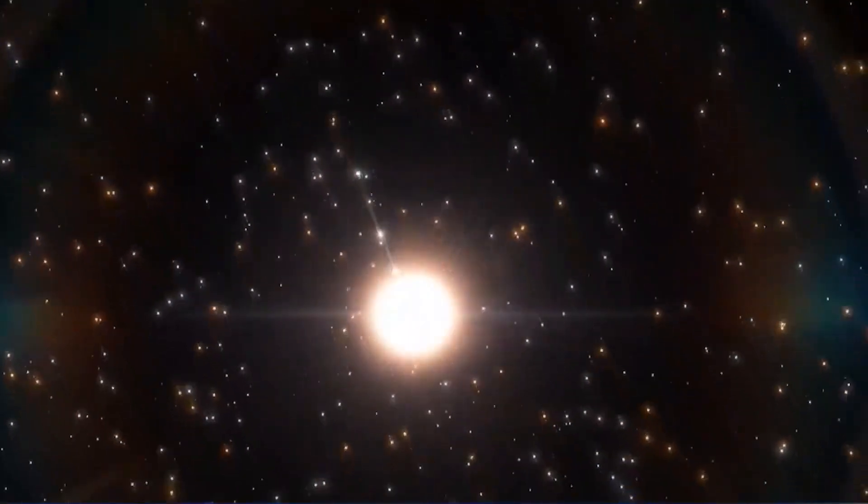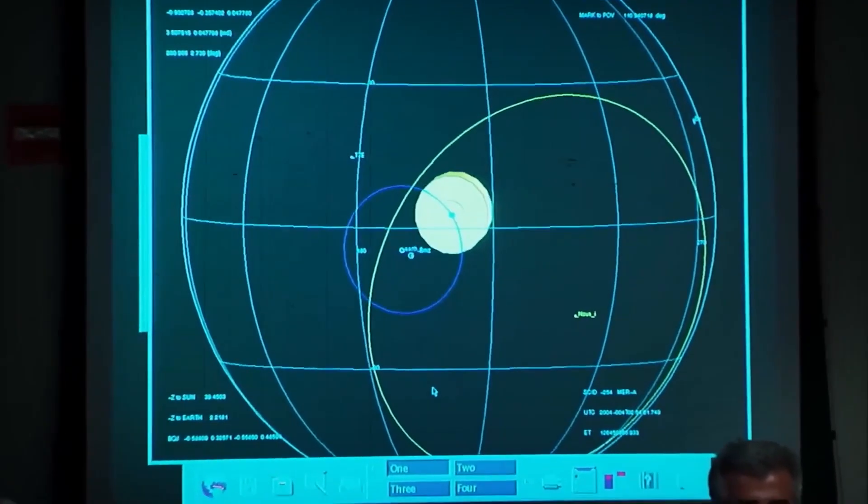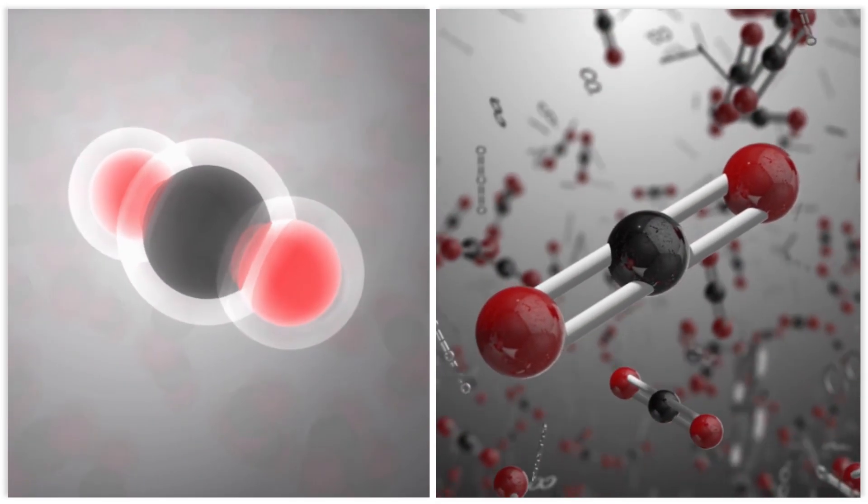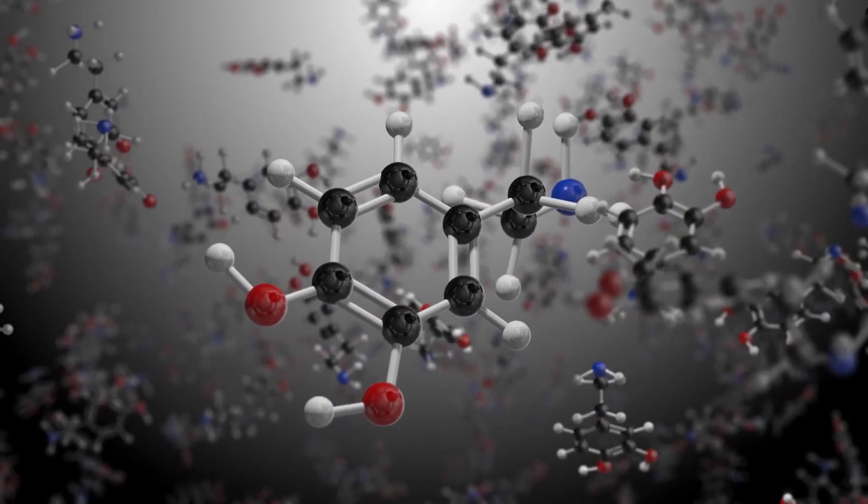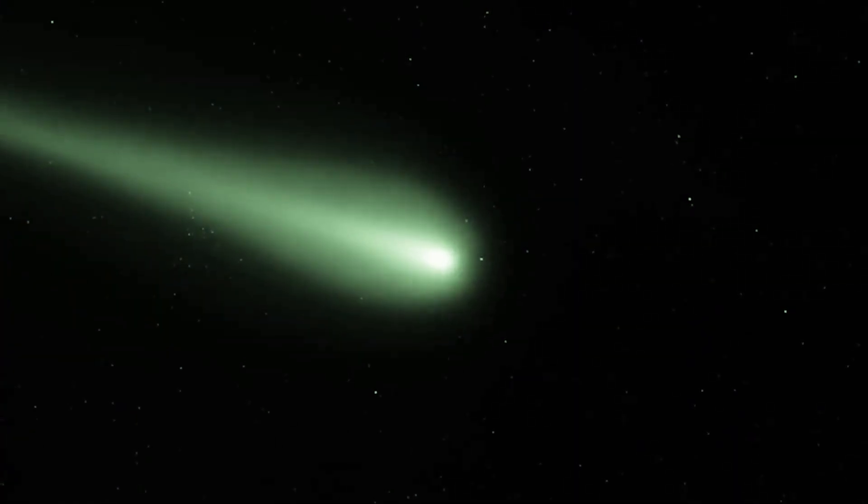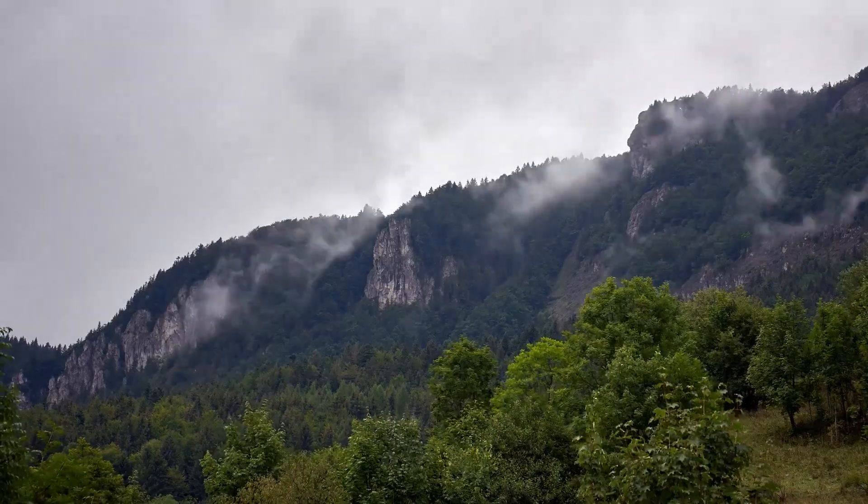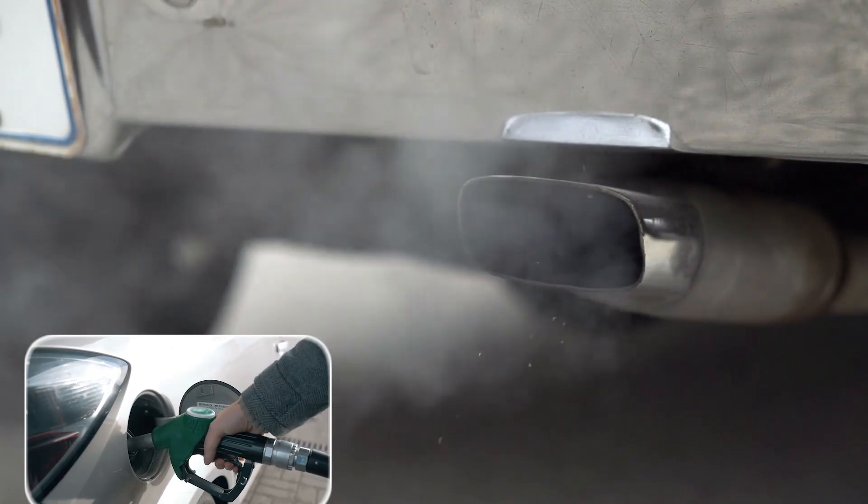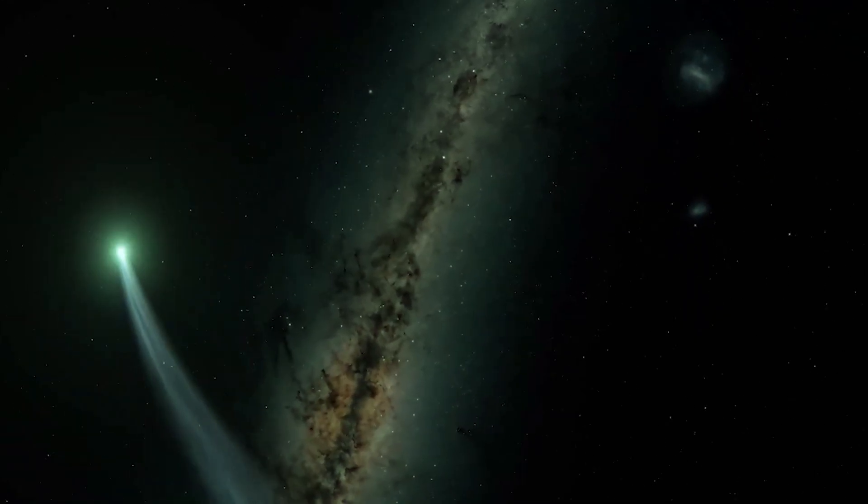What many overlooked is that 3I Atlas is producing something far more exotic. The instruments detected huge amounts of diatomic carbon, or C2, and triatomic carbon, C3. To put it simply, these are molecules made of 2 and 3 carbon atoms linked together. While carbon is common on comets, seeing it in these forms and in these quantities is incredibly rare. The production rate is so unusually high that it completely overshadows the amount of water vapor being released. Think of it like a car that's supposed to run on gasoline but is somehow producing more exhaust than the fuel it's burning. It just doesn't add up.